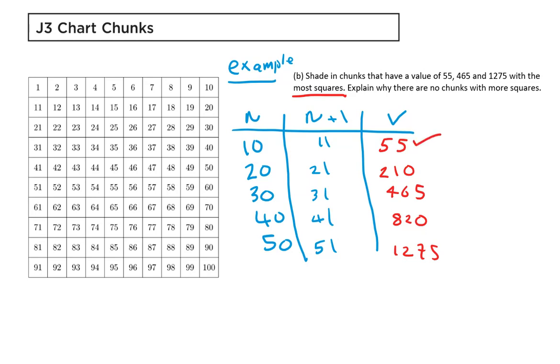So we've already done the first one. 465 is the second one, and 1275 is the last one. I'd like to reiterate that these are the most squares because we've used the smallest values in the individual squares.